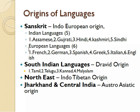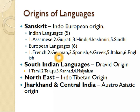There are also six European languages that originated from the Indo-European family: French, German, Spanish, Greek, Italian, and English. Indian and European languages show some similarity because they belong to the same family. For example, 'matra' in Sanskrit, 'mother' in English, and 'ma' in Hindi are somewhat similar.